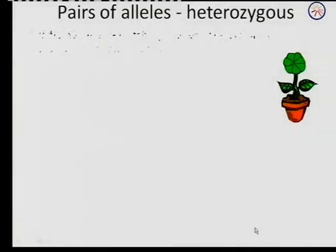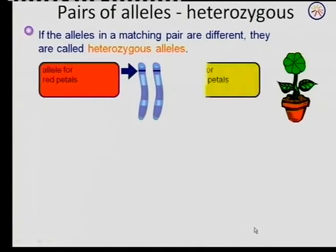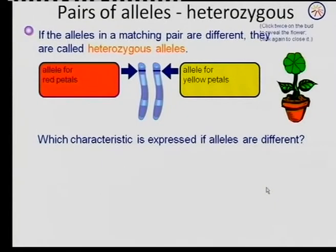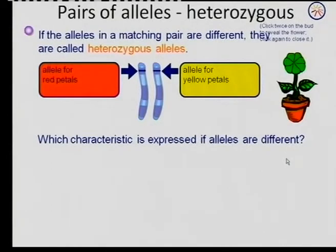But what happens if we have one allele pair where one codes for red and the other for yellow? Now we have to question: what will the color of the offspring be if we should cross the two? Here we have a characteristic with different alleles — which one will be expressed in the outer appearance?